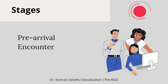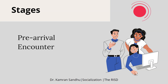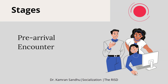When a person enters into the organization, they will face the encounter stage. Here, individuals face the possibility of a dichotomy between their expectations about their jobs, their co-workers, supervisors, and the organization as a whole. If expectations prove to have been more or less accurate, the encounter stage merely provides a refinement of the perceptions developed before.